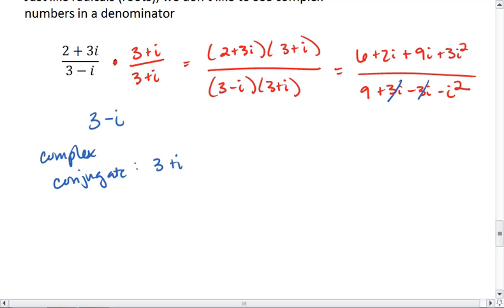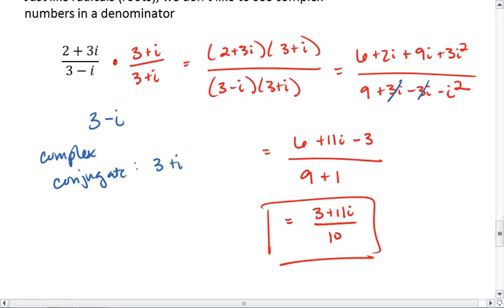The 3i's in the denominator cancel. We're left with 6 plus 11i minus 3, all over 9 plus 1. We have 3 plus 11i all over 10. And that is much more preferred to the fraction that we started with.